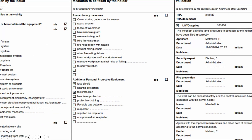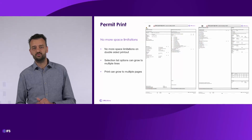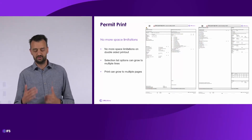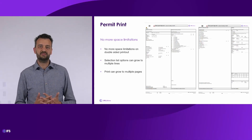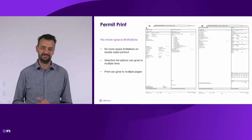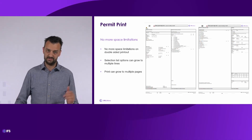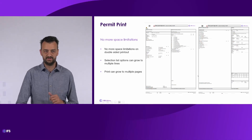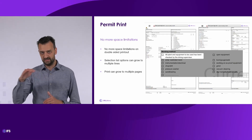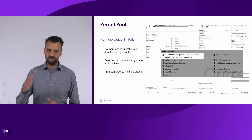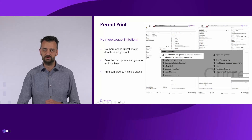We also have a double-sided version of the print where there is already more space, but we created even more space on that print because we made it so that it can grow endlessly in theory. So it was two sides printed — now it can be three, four, five, as many pages as you need. Also the selection list options themselves can grow over more lines. Until now it was always limited to one line per selection list item, but now depending on the length of the text, it will grow over more lines so you will always see the complete content of those selection list items.